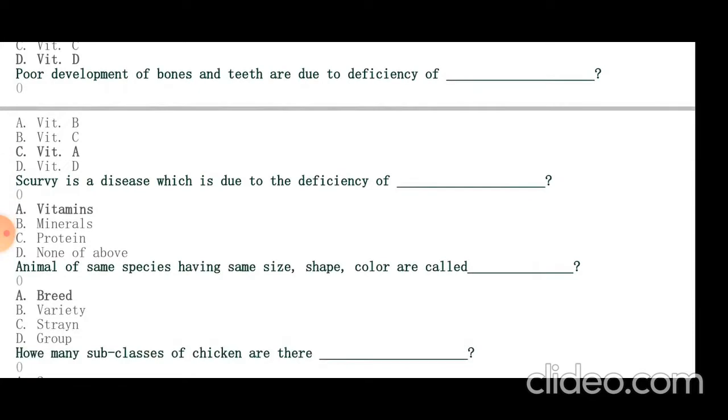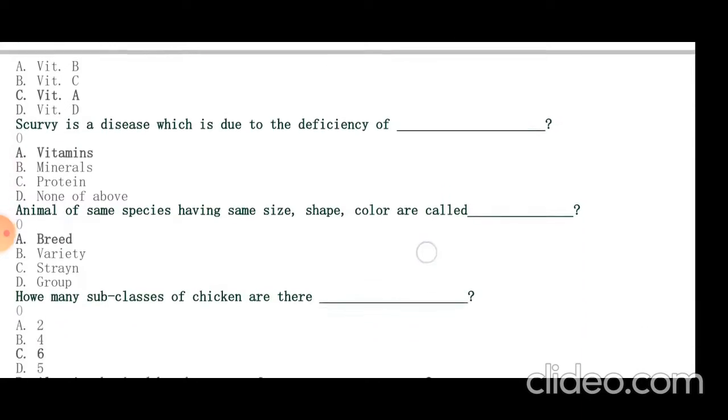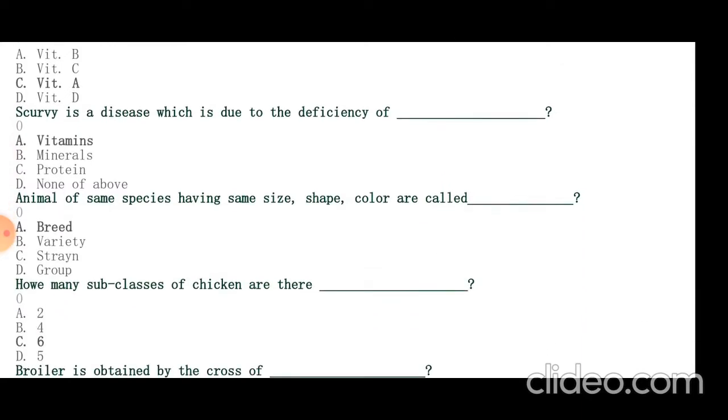Animals of same species having same size, shape and color are called breed. There are six subclasses and four classes of chicken. Four classes are Mediterranean, Asian, European and American breeds.